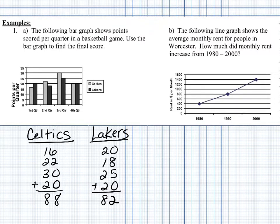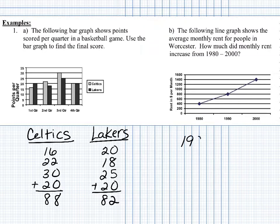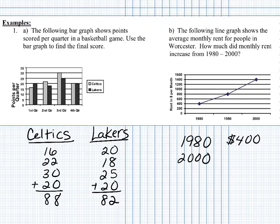In part B, the following line graph shows the average monthly rent for people in Worcester. How much did monthly rent increase from 1980 to 2000? By looking at the graph we see that in 1980 the rent was $400 per month. Looking at the year 2000, the monthly rent increased to $1,400. So we can tell that there was an increase of $1,000.